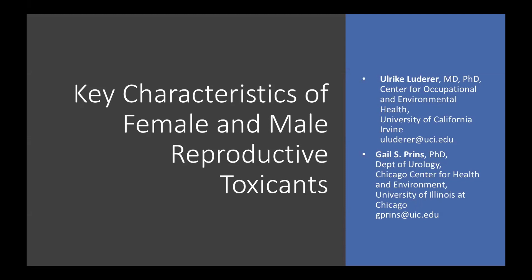Dr. Lutterer's research focuses on the mechanisms by which toxicants and ionizing radiation disrupt ovarian function, accelerate ovarian aging, and cause ovarian cancer in adults and subsequent generations following exposure during development. She will present the data on the key characteristics of female reproductive toxicants. Our second speaker is Dr. Gail Prins. She is the Michael Reiss Professor of Urology and Physiology at the University of Illinois at Chicago and co-director of the Chicago Center for Health and the Environment in the School of Public Health. She is also the director of the University Andrology Laboratory. Her basic research focuses on estrogen actions in the prostate gland, including the influence of early life exposure to endocrine disrupting chemicals on prostate cancer risk later in life. She will present the data on the key characteristics of male reproductive toxicants. Thank you both for joining us today to present these groundbreaking publications. I'll now turn it over to Dr. Lutterer, and when she finishes her part, Dr. Prins will just jump in to continue.